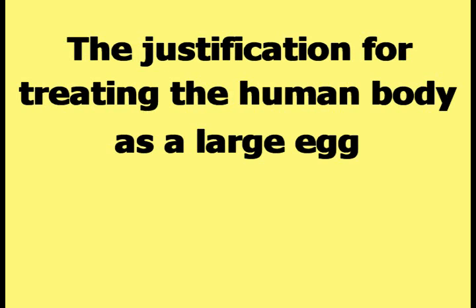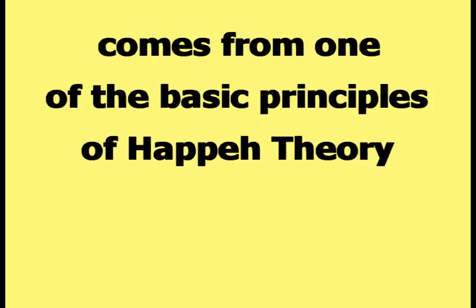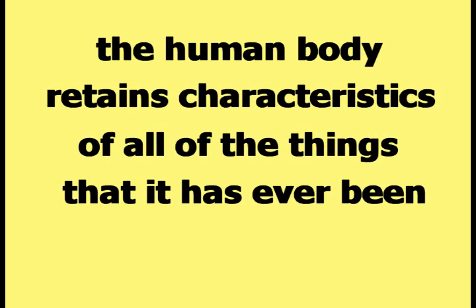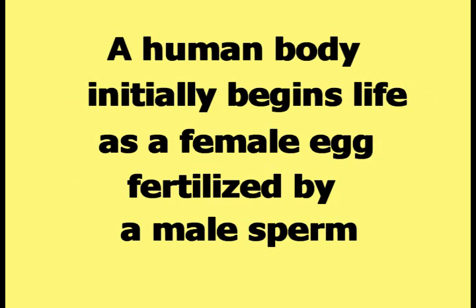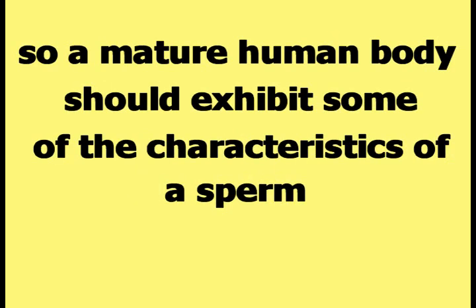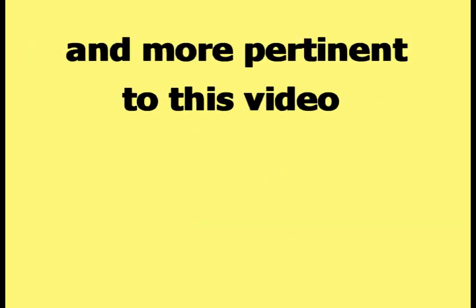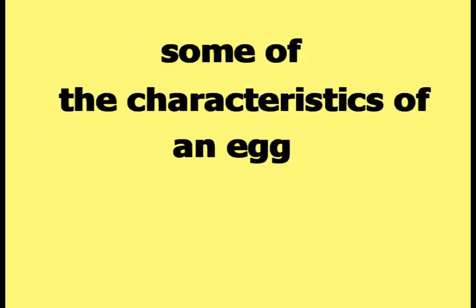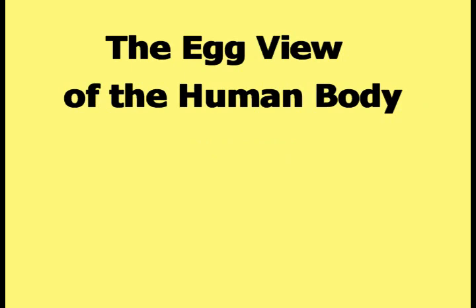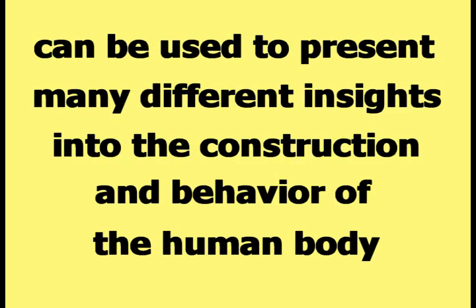The justification for treating the human body as a large egg comes from one of the basic principles of happy theory. According to happy theory, the human body retains characteristics of all of the things that it has ever been. A human body initially begins life as a female egg fertilized by a male sperm, so a mature human body should exhibit some of the characteristics of a sperm and, more pertinent to this video, some of the characteristics of an egg. The egg view can be used to present many different insights into the construction and behavior of the human body.